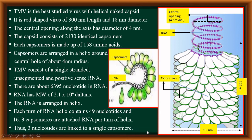You can see how the capsomers are attached to the RNA, and because of the helical coiling of RNA along with the attached capsomers, the virus becomes rod-shaped.